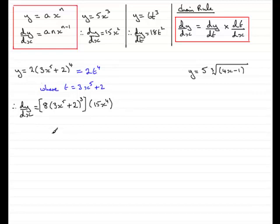All we need to do now is just clean this up. 8 times the 15x to the power 5 gives us 120. And then we've got x to the power 4. Put that in next. And then we've got the bracket. 3x to the power 5 plus 2. All cubed. And there you have it.